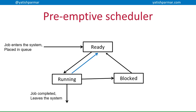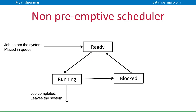Another reason a job may be moved back to the ready state is round-robin scheduling, where the algorithm decides another job now needs CPU time slices allocated to it. Additionally, an interrupt of higher priority than the currently running job can come in and needs to be dealt with immediately.